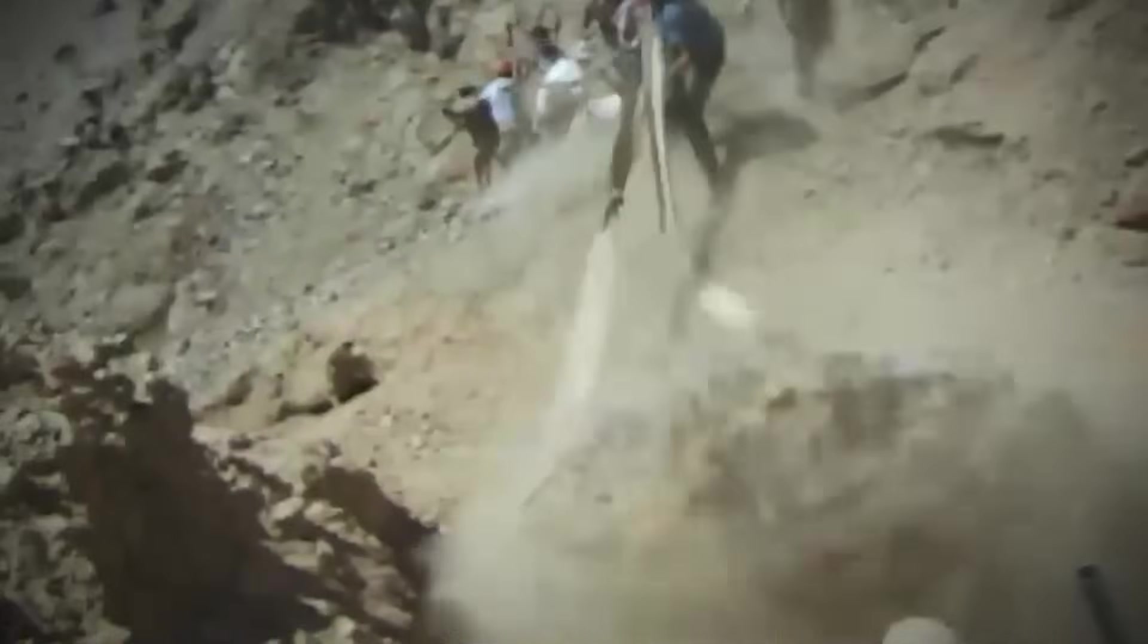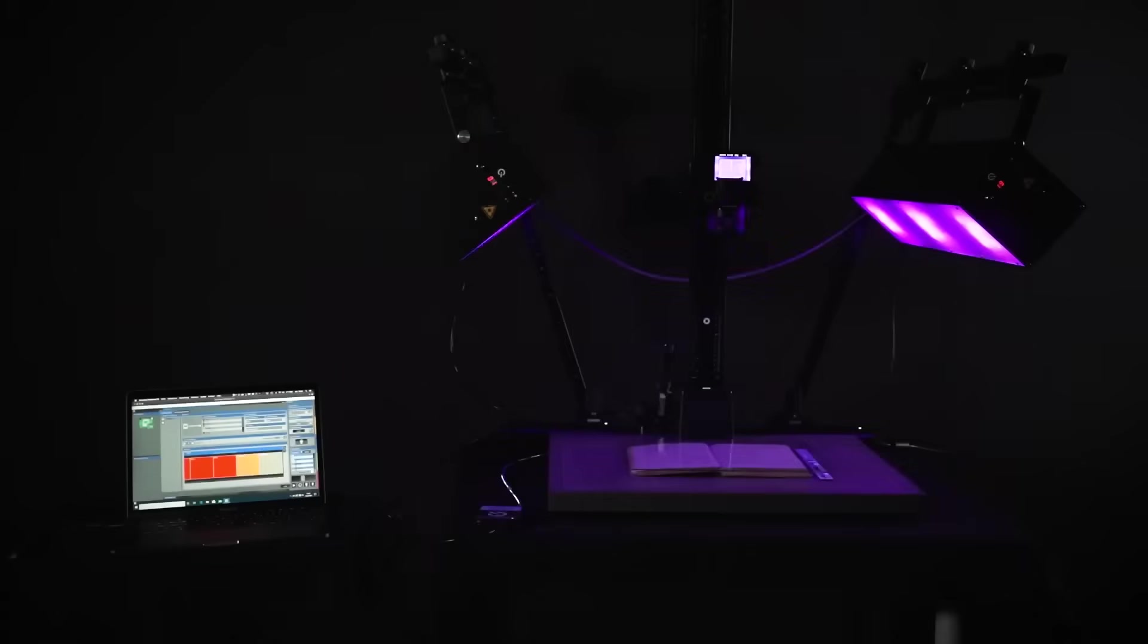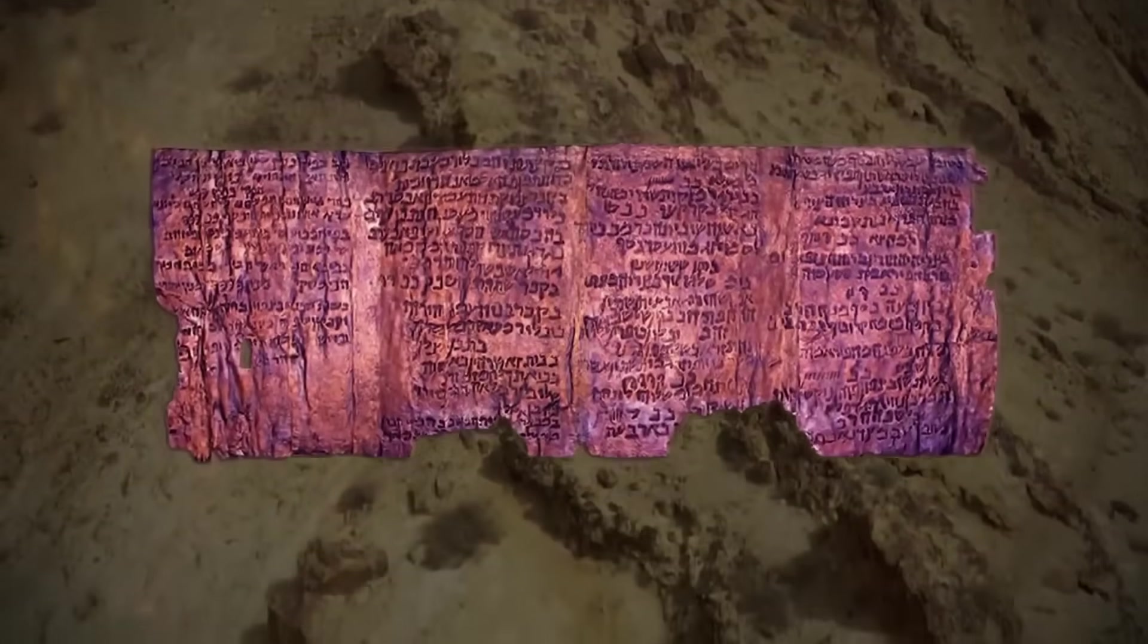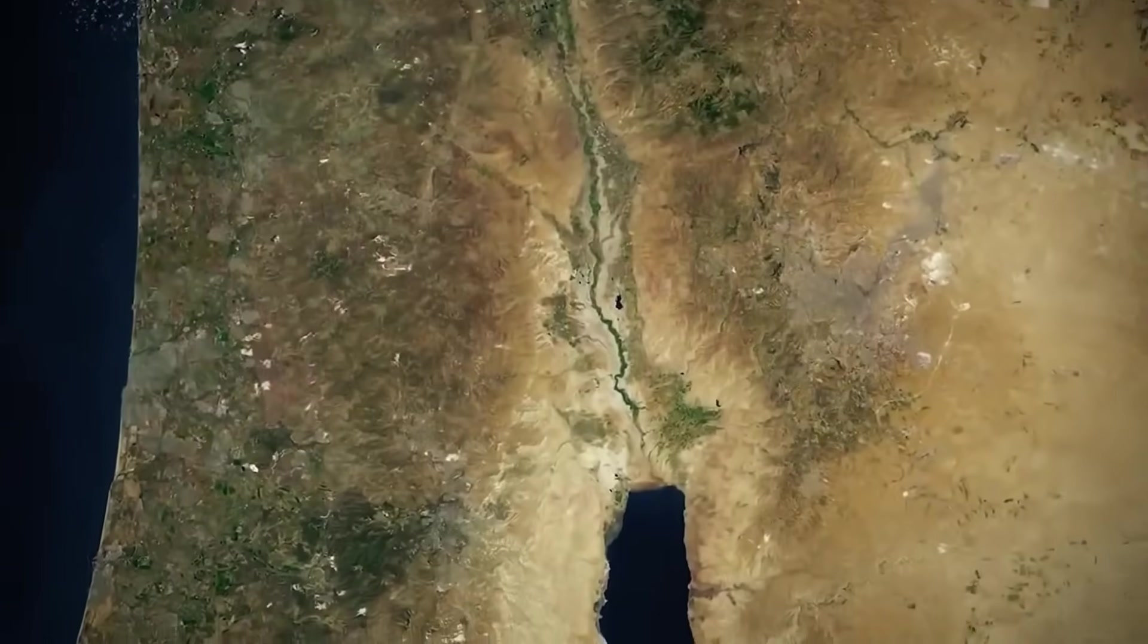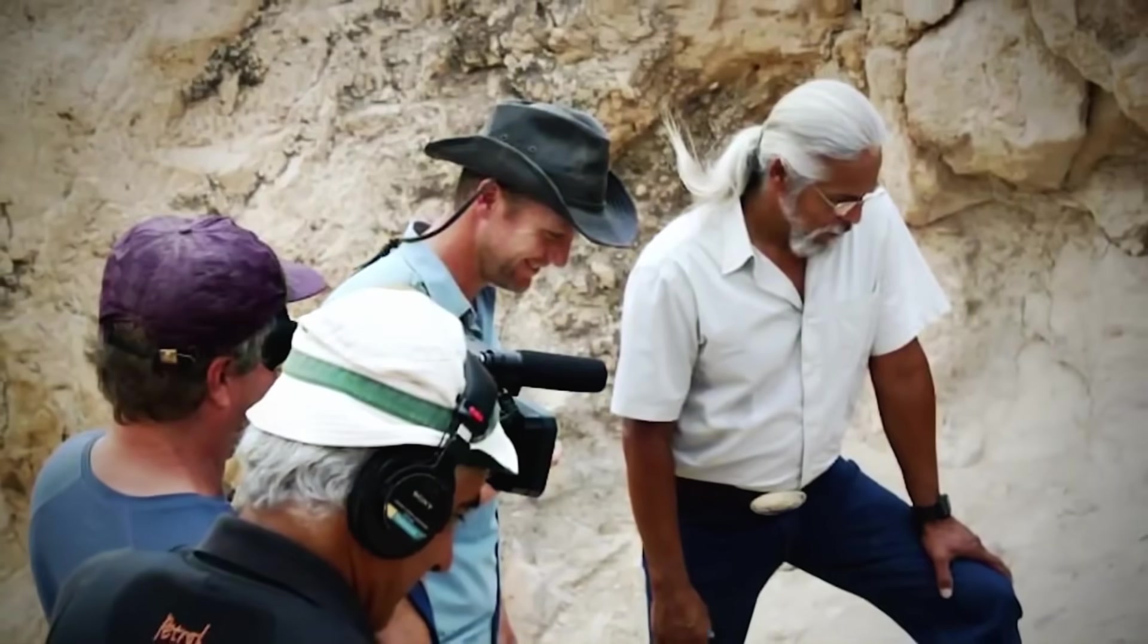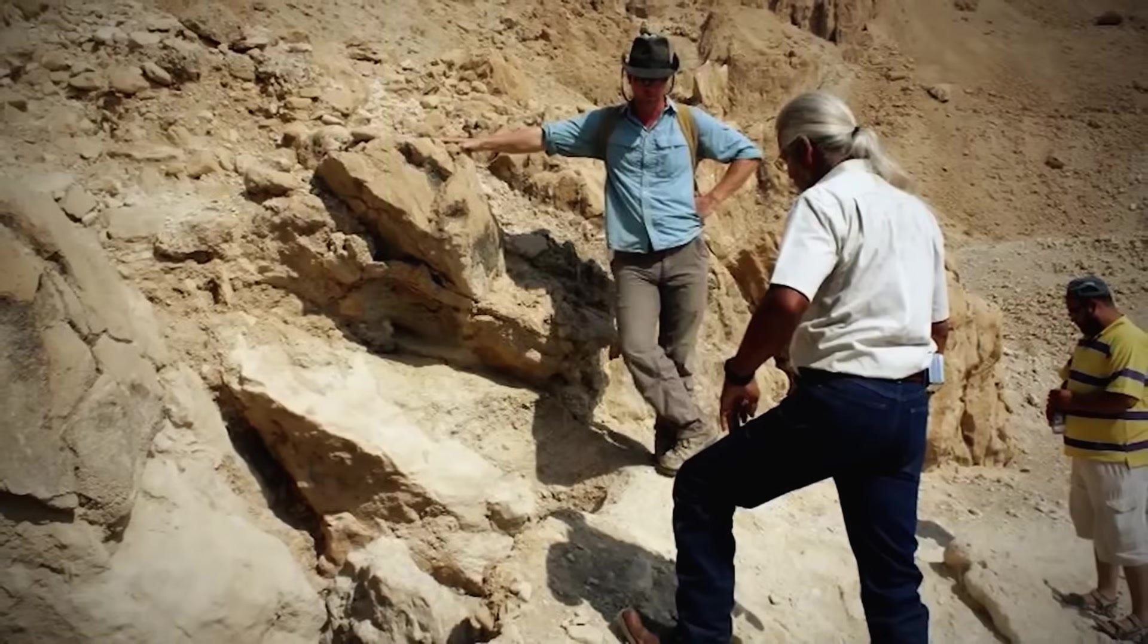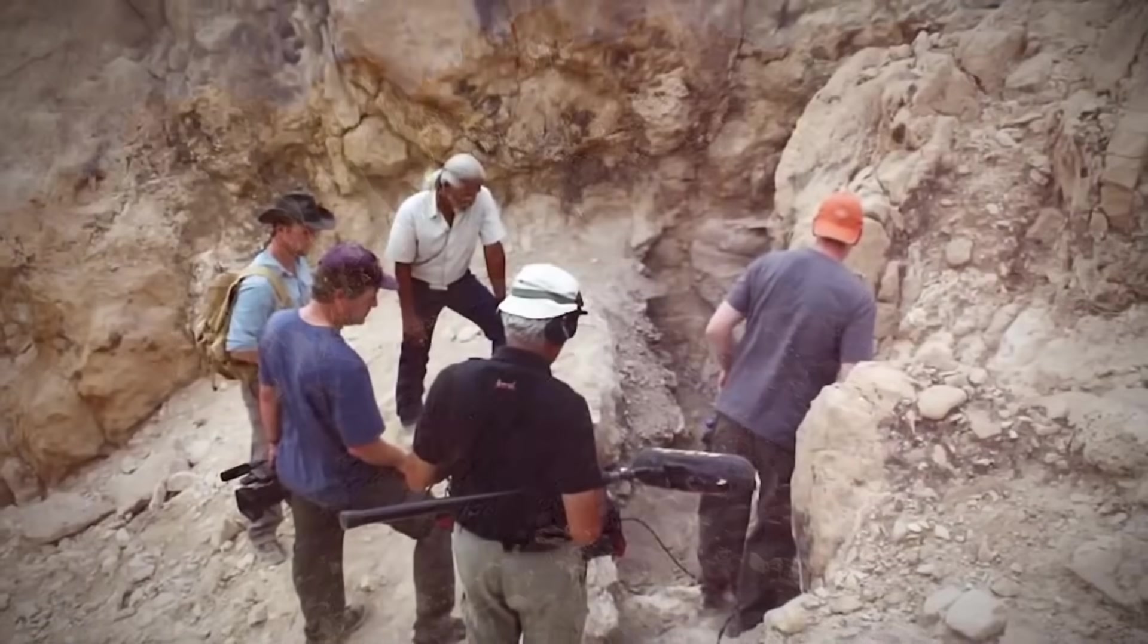Then there's Elijah's ascension in chariots of fire. And Ezekiel's famous vision of radiant wheels with fire enfolding itself. For centuries, we've interpreted these as purely spiritual metaphors. But what if they were attempts to describe encounters with advanced energy sources? The Hebrew word, or, means light or radiance. The same root word used in the Copper Scrolls, vessel of radiance. This linguistic connection can't be ignored. We see similar patterns in other ancient cultures.